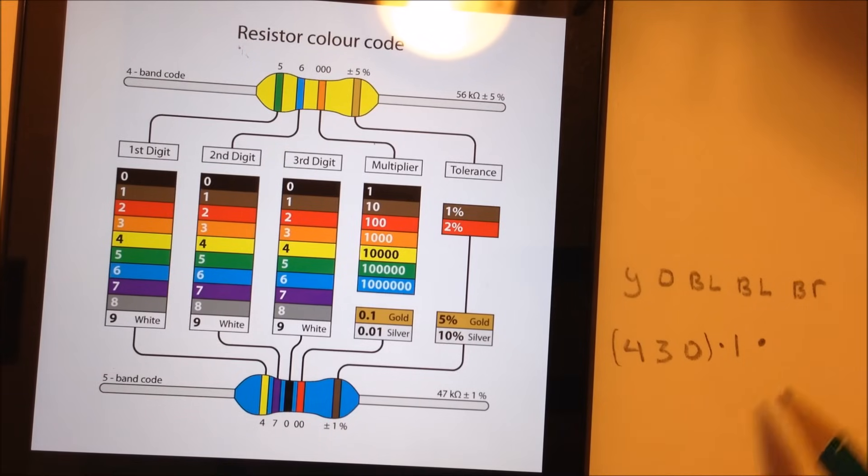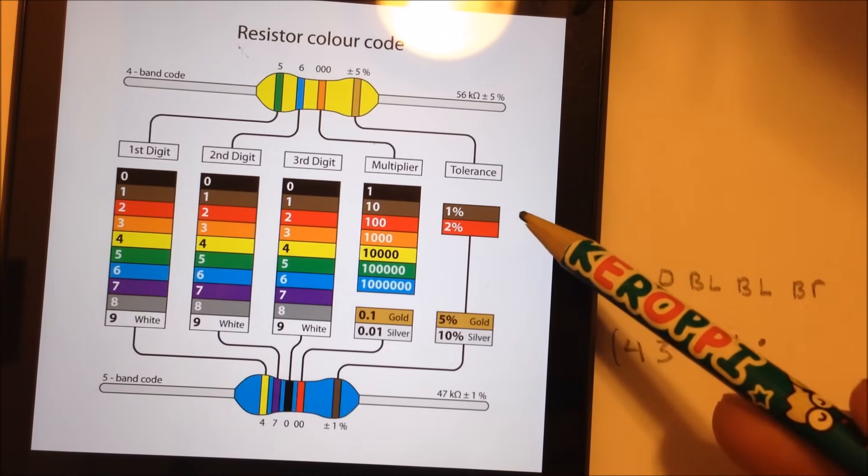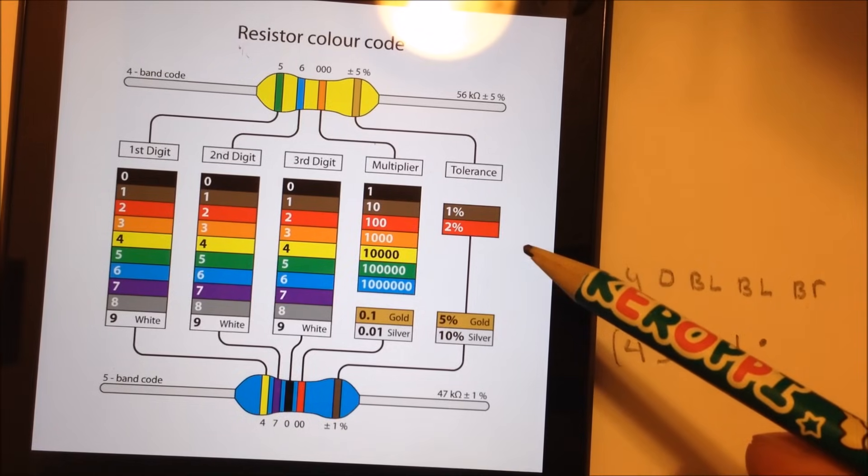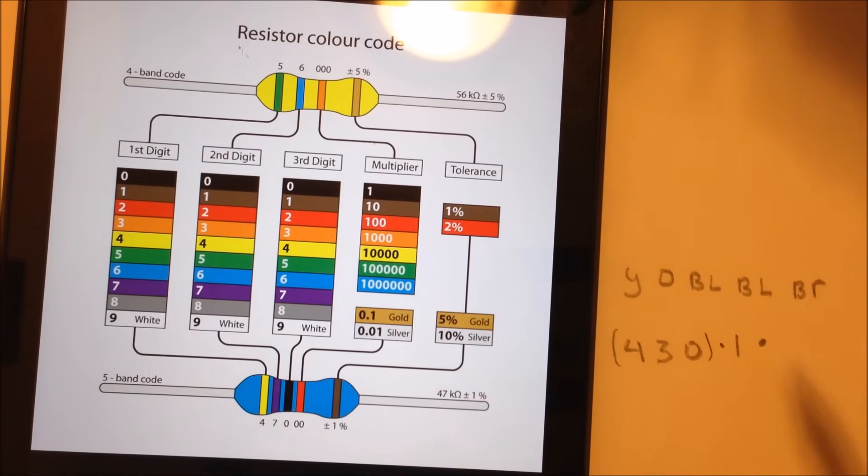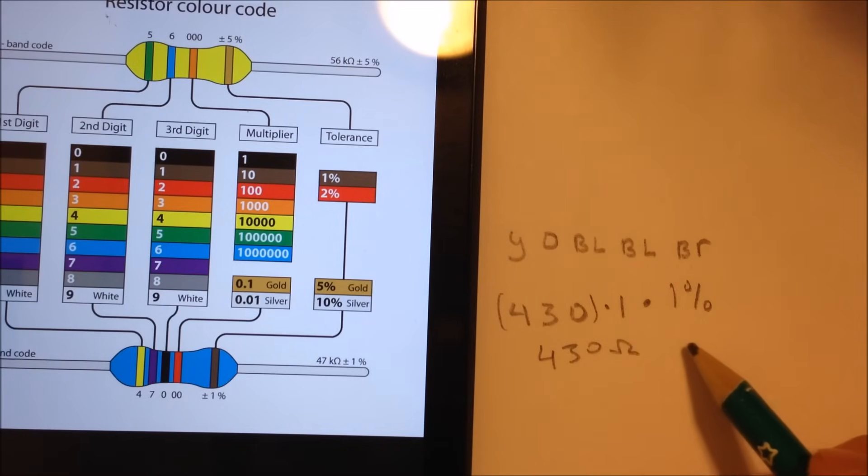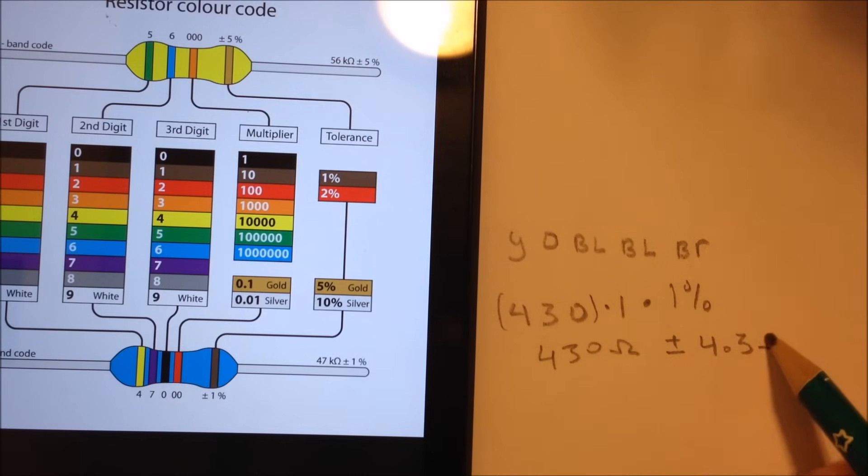And then we got one, two, three, and then the last one in here is our multiplier, which is black, so it's just one. So 430 multiplied by one is just 430. And then we have our tolerance here. And I said here this one was brown. So we look here, brown is 1%. So we have a 1% tolerance.